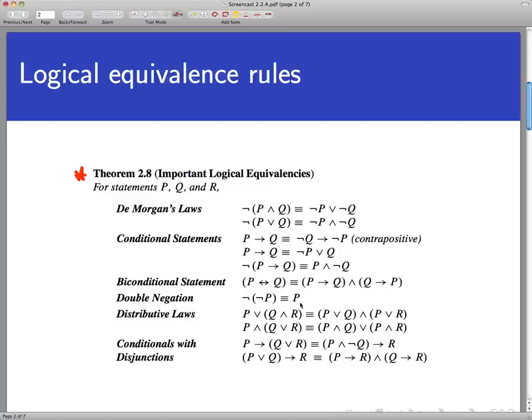Again, all of these were established by truth tables earlier and you're familiar with these. Here's DeMorgan's Laws, here's the contrapositive of a statement being equivalent to its original, here's the negation of a conditional statement, and a bunch of other stuff that you've seen.